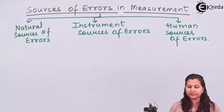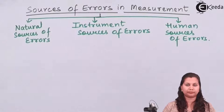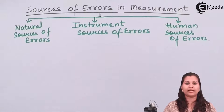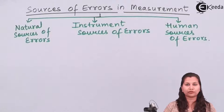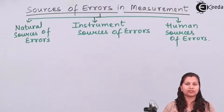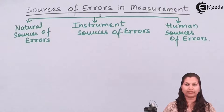Errors which occur due to the natural environment — like if there is any change in the environmental conditions surrounding the instrument, such as wind speed changing, humidity of the air changing, change in air pressure or temperature, or if any magnetic or electric field is present around the instrument — then errors occurring due to these changes are called natural errors.